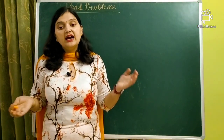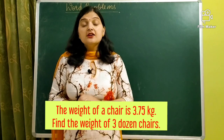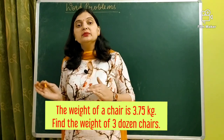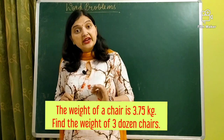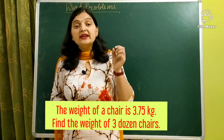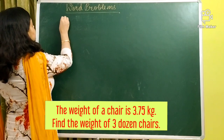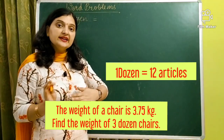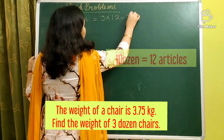Our next question: the weight of a chair is 3.75 kg. Find the weight of three dozen chairs. If you look carefully, this question is a little different. The weight of one chair is given. You have to find the weight of three dozen chairs. First you need to find out how many chairs that is. One dozen means 12 things, so three dozen means 3 multiplied by 12, which equals 36.